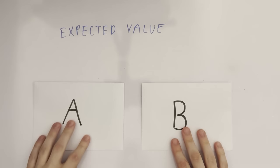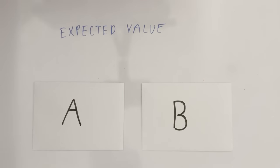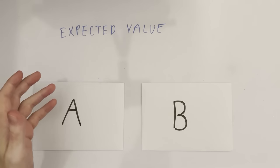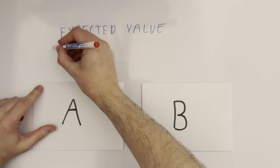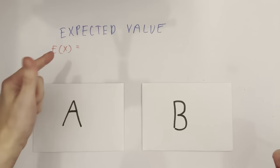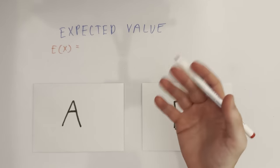Now, what is expected value? Expected value is a mathematical value in probability theory, so it involves a little bit of probability and statistics. As its name suggests, it is essentially a generalization of the weighted average. In our case, the expected value of what is in A is the average of all the money in general. This is denoted by E(X), which means the expected value of X, where X is the value we're getting — the probability. It is given by the weighted average.